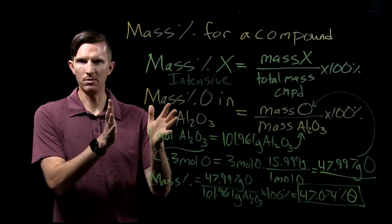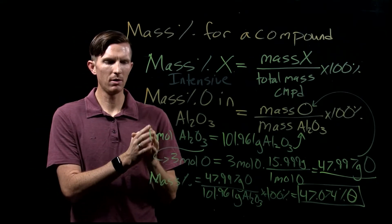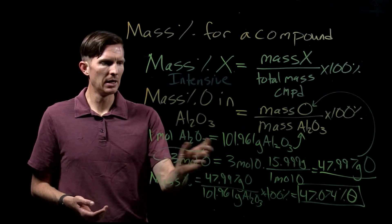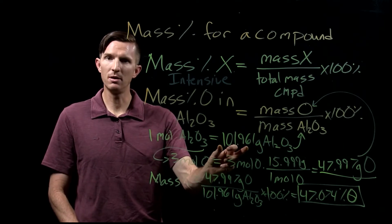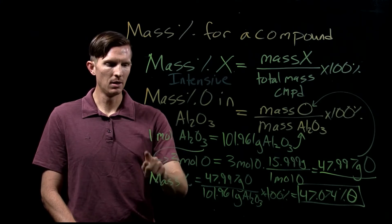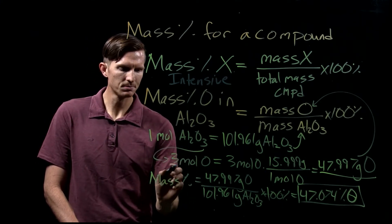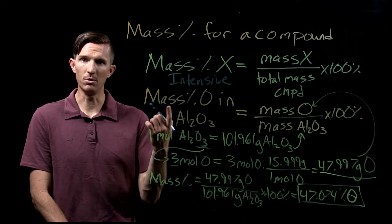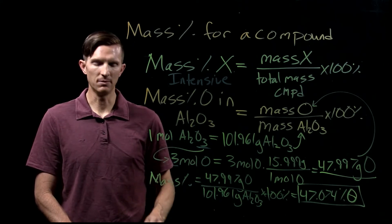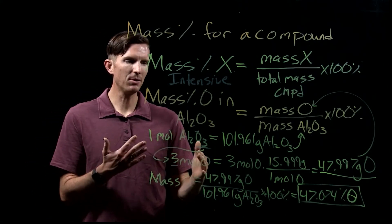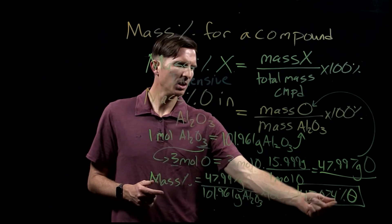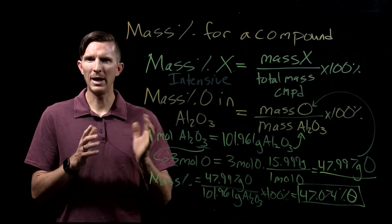So the approach here is: when we don't know how much of a compound we have, we just assume one mole of it. We find the molar mass of that compound, which tells us how many grams we'd have in one mole. Then we say we have one mole of aluminum oxide, so we have three moles of oxygen — that's how many moles of oxygen are in one mole of aluminum oxide. We find the mass of those three moles, then we find the mass percent. This gives us the ability to relate the mass amounts of each element to the whole.